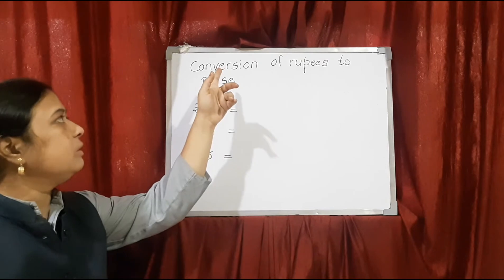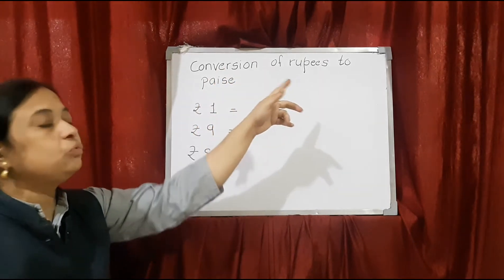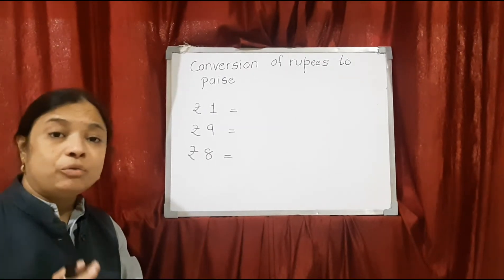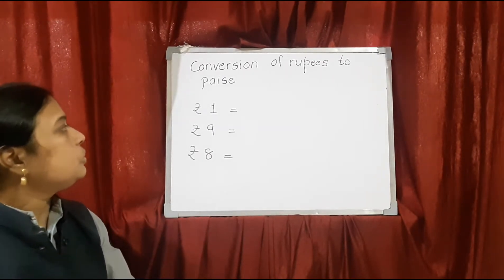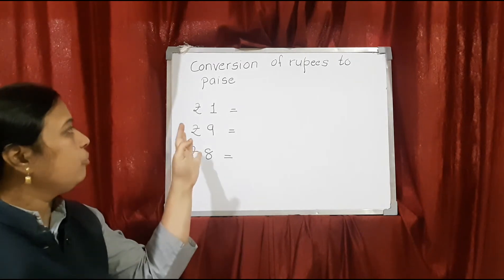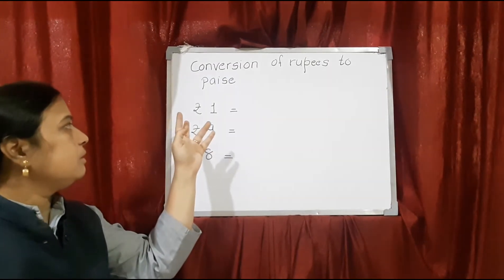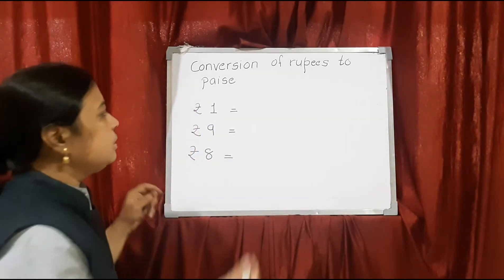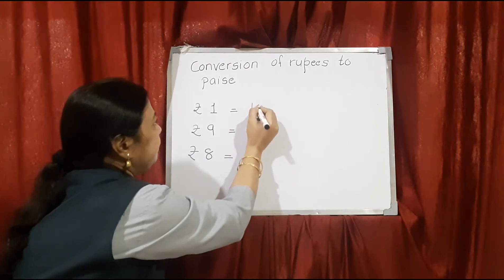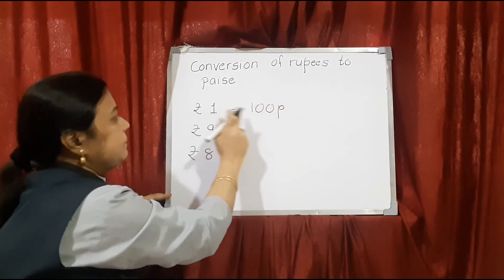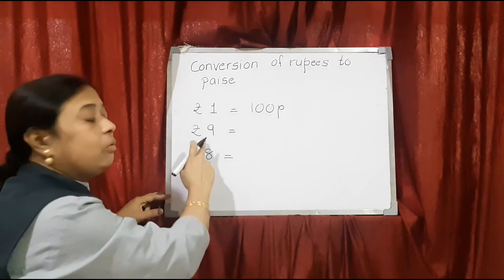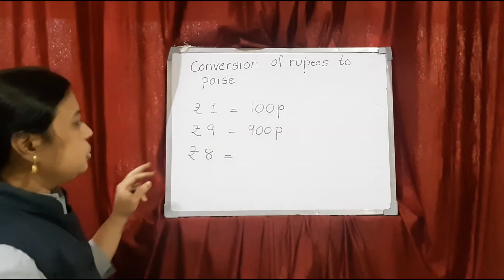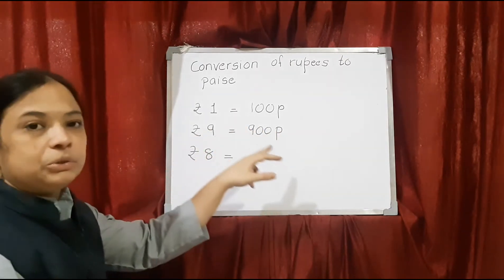Today we are going to learn conversion of rupees to paise. In the last video I had already told you that 1 rupee is equal to 100 paise. In that way only we have to convert rupees into paise. Here, rupee 1 makes 100 paise. So, 9 rupees will make 900 paise. This is how we convert rupees into paise.